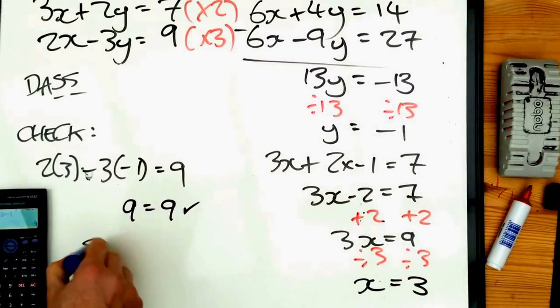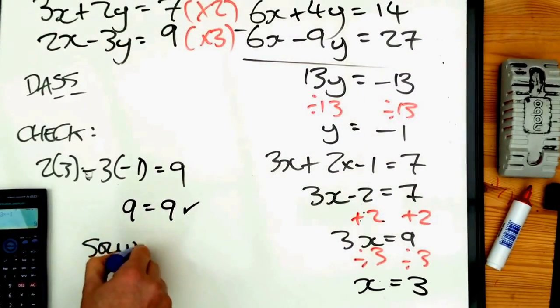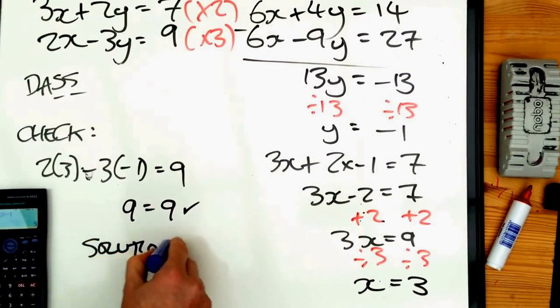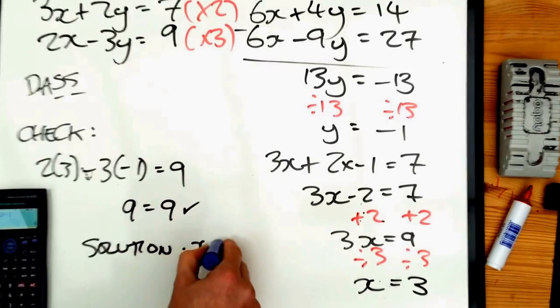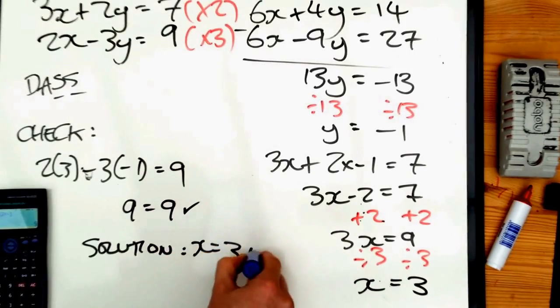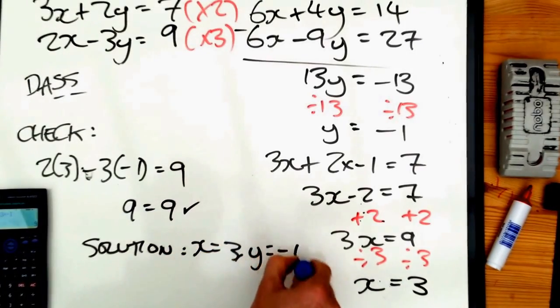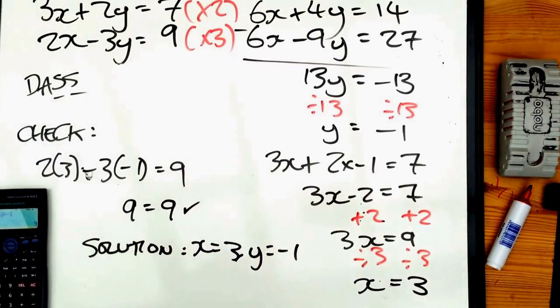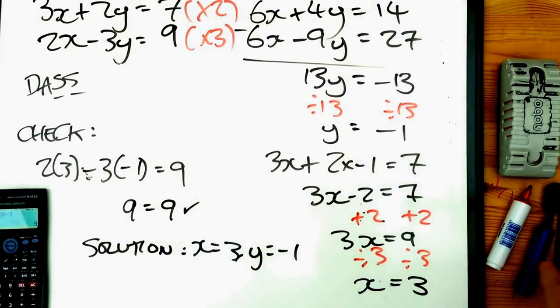Therefore, the answer is x is equal to three, y is equal to minus one. There we have a very easy three or four marks in our GCSE examination.